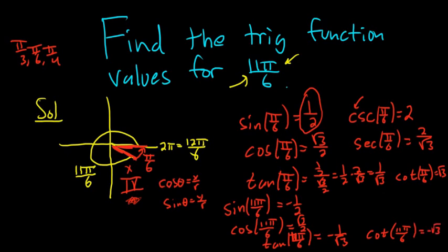And let's see, cosecant of 11 pi over 6, that's going to be negative 2. And lastly, the secant of 11 pi over 6, that's going to be 2 over the square root of 3.